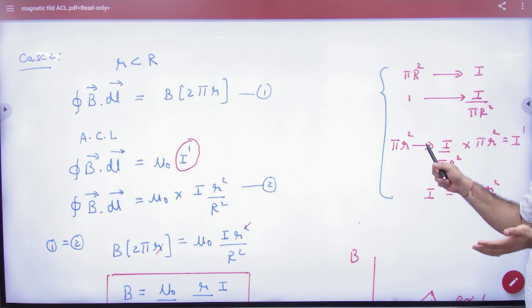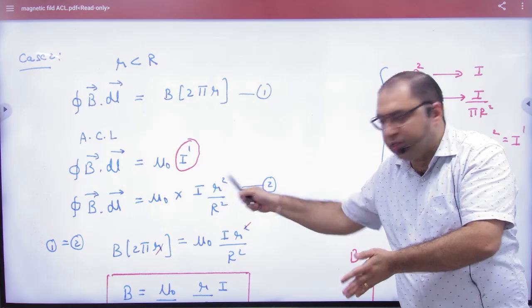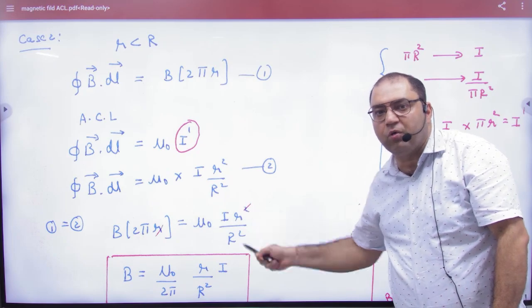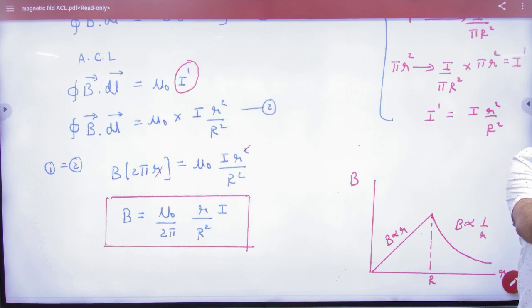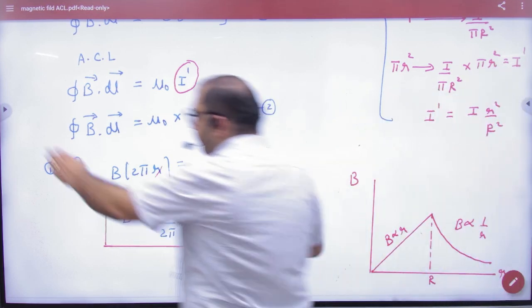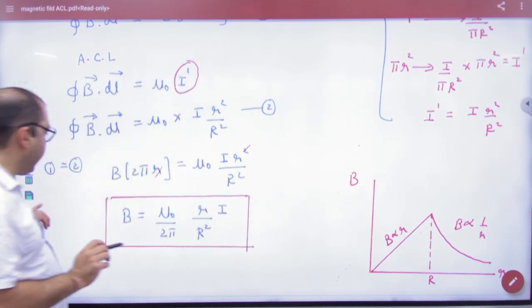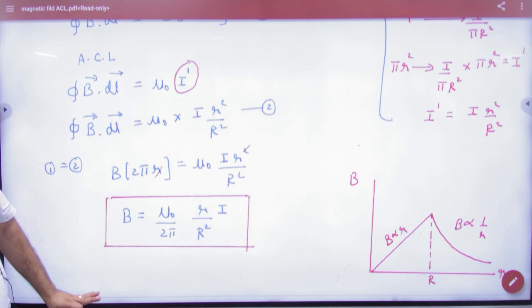How to find i'? If total wire's cross-section is πR² with current I, then for πr² the current is proportional. Put this i' here. Equate both expressions of B·dl. Equate small r terms to get the value of B. Very important formula. B's formula is written here. Before B's formula, note one more thing. Inside any wire, B is directly proportional to small r.